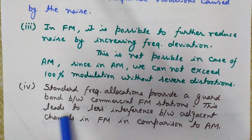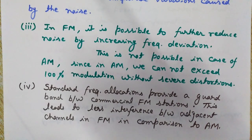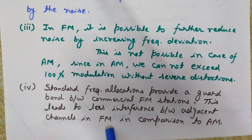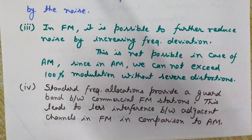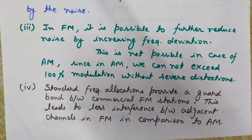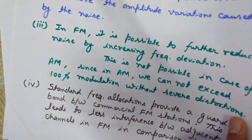The fourth advantage is that standard frequency allocations provide a guard band between commercial FM stations, leading to less interference between adjacent channels in FM compared to AM. When many FM stations simultaneously broadcast, the guard bands provide a safe frequency separation so signals do not interfere with each other. This separation is not available in amplitude modulation.